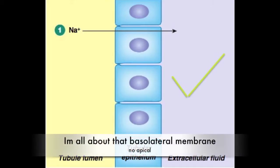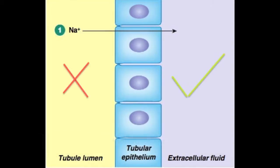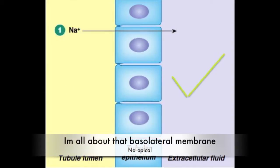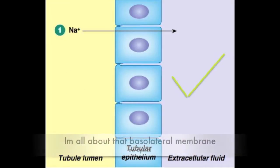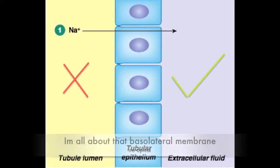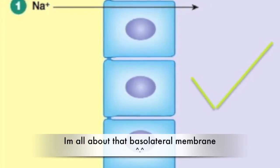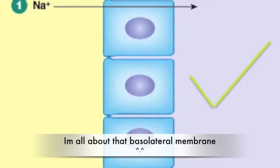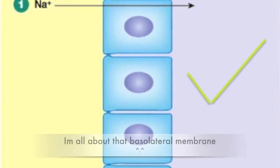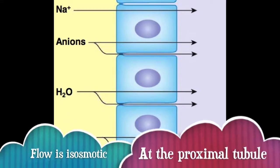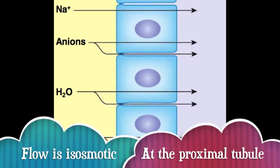I'm all about that basolateral membrane, no apical. I'm all about that basolateral membrane, no apical. Flow is isoosmotic at the proximal tubule.